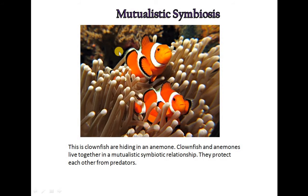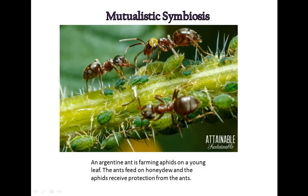An example of mutualistic symbiosis is clownfish hiding in an anemone. Clownfish and anemones live together in a mutualistic symbiotic relationship and protect each other from predators. Another example is an Argentine ant farming aphids on a young leaf — the ants feed on honeydew and the aphid receives protection from the ants.